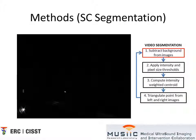During the collection of stereo camera images, there are certain background frames which are devoid of the laser signal. By performing background subtraction, it becomes much simpler to segment the stereo camera spot.